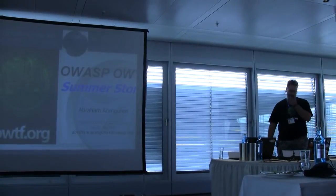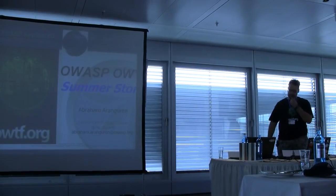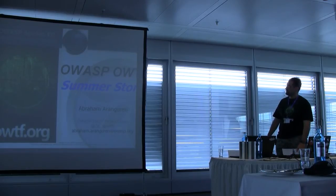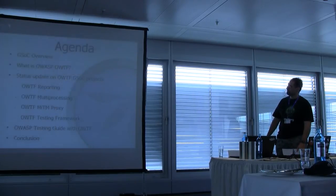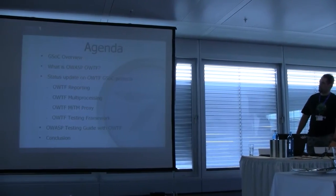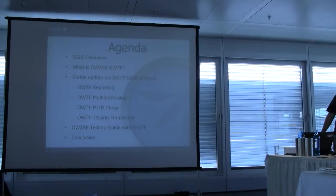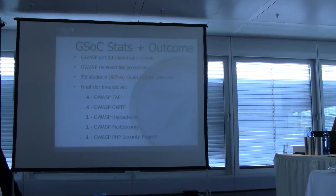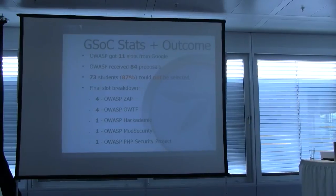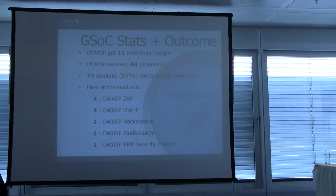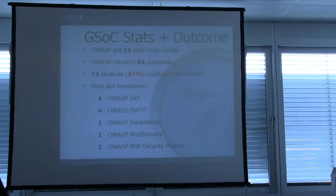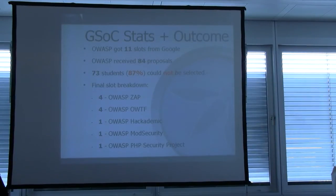I will have to rush through a lot of the slides. Everything is going to be online. I'll cover a little bit of what happened with the Google Summer of Code. We received 18 slots from Google, so we could take 11 students. The problem is we got 84 proposals, so 87% of the students couldn't be selected.